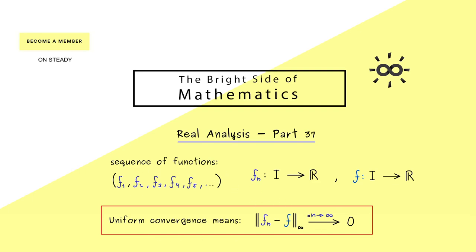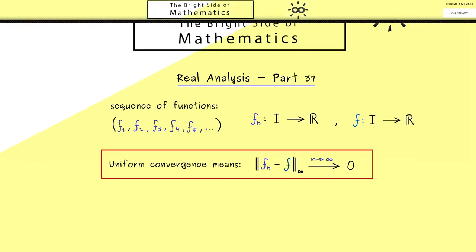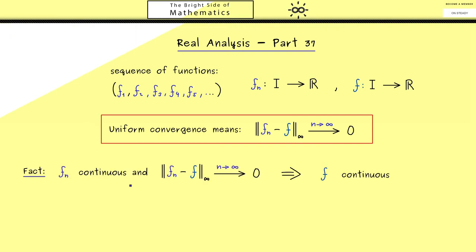As we discussed before, we already know it conserves continuity. This is an important fact you really should remember. In short, if all the fn are continuous and we have uniform convergence, then the limit function f is also continuous. If you want to see a proof you can watch part 31 again. In this video we don't talk about continuity but rather about the new property differentiability.